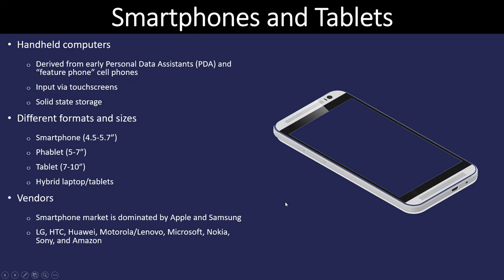Smartphones and tablets — most everyone has interacted with them. They are small, have solid state storage, no moving parts, and almost all interaction is done via a touch screen. They come in several sizes: smartphone size around four and a half to five inches, the phablet category, and tablets. There are also hybrid laptops and tablets that are convertible, running Android OS one way and Windows as a full-blown tablet another way. Apple and Samsung are at the top of the vendor list.